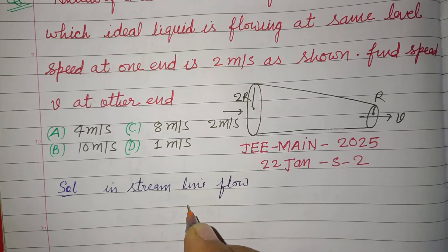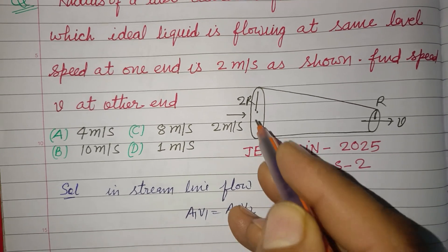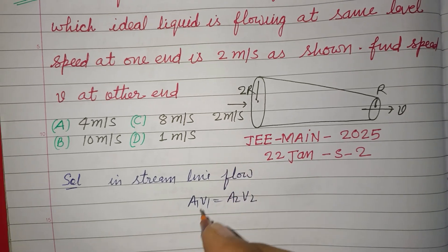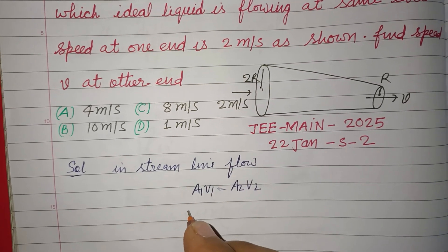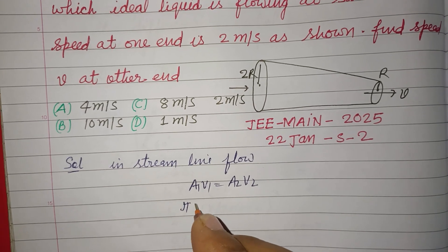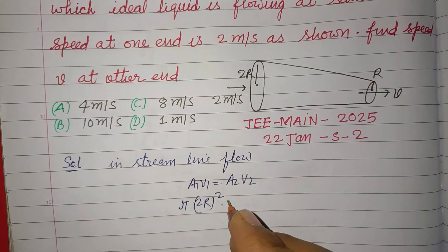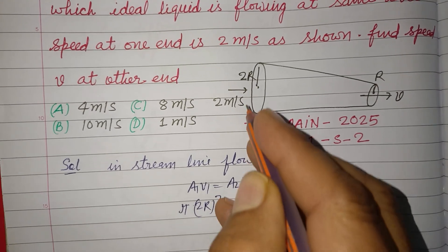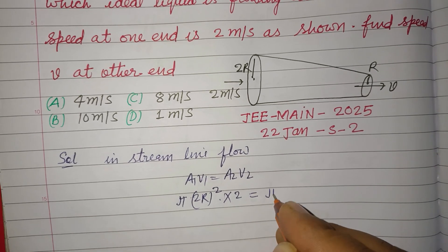In streamline flow, we know that A1V1 equals A2V2. Here the area of the circular mouth is pi r. R is 2r here, r square into V1. V1 is 2. So A2 is pi r square. Here radius is r and velocity is V.